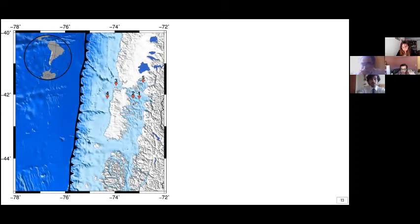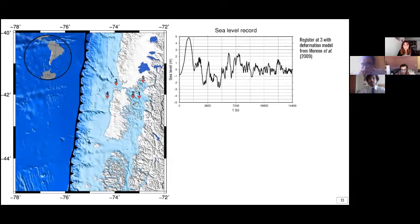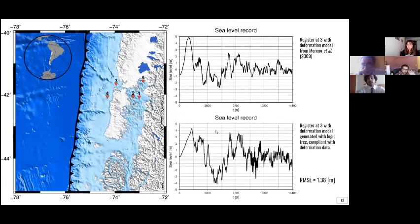And also, we can compute virtual mareographs of the tsunami models. This is an example of the same random slip distribution that I showed in the previous slide. This is the register at station 3, this one, from the deformation model from Moreno et al. 2009. And this is the result of the tsunami modeling using the deformation showed in the previous slide. The RMSE of both of these time series is 1.38 meters, which is not as good, but it shows in what fashion we will be comparing this time series.